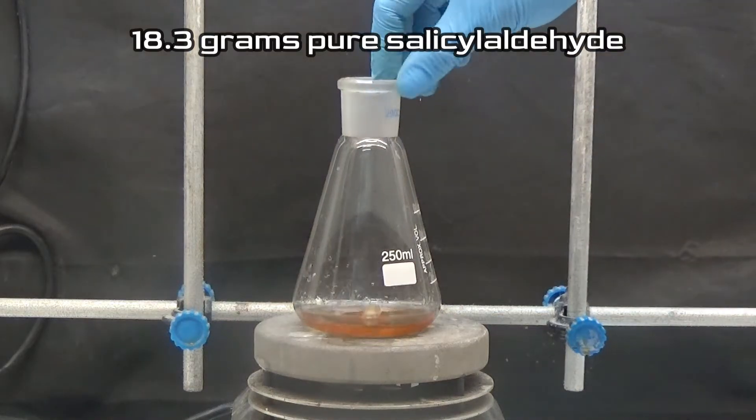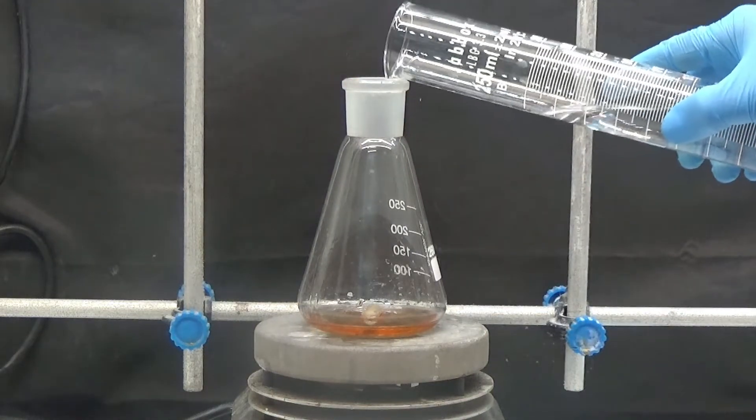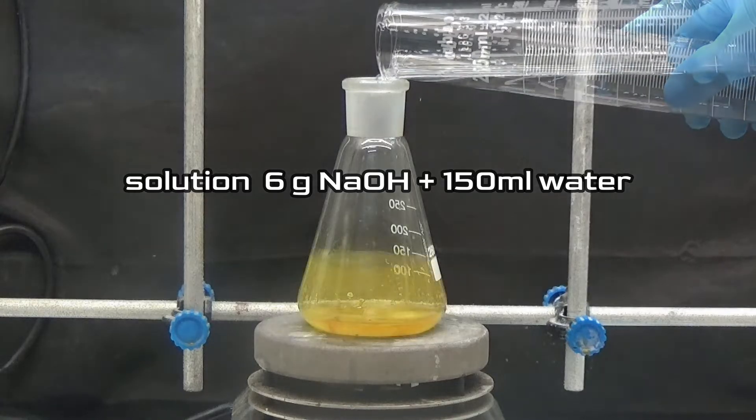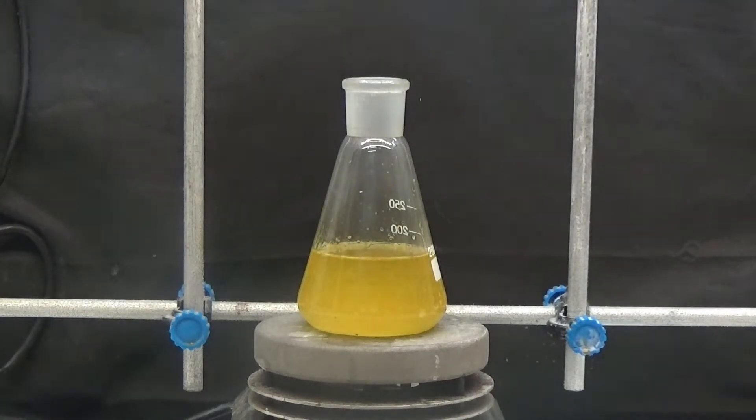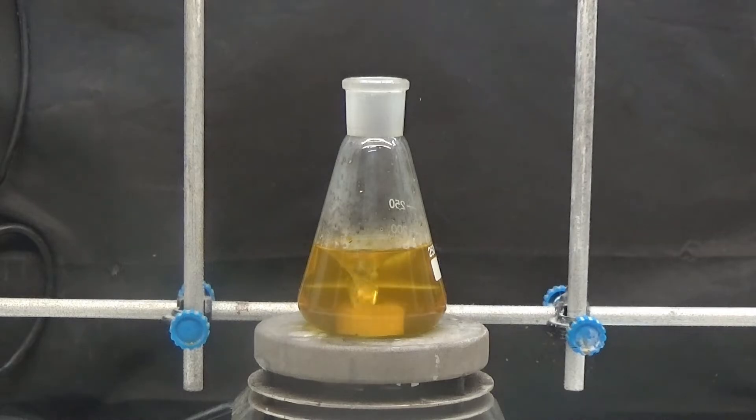Put the flask on a stir plate and add a solution of 6 grams of sodium hydroxide in 150 milliliters of water. Stir for a few minutes until the solution is homogeneous.